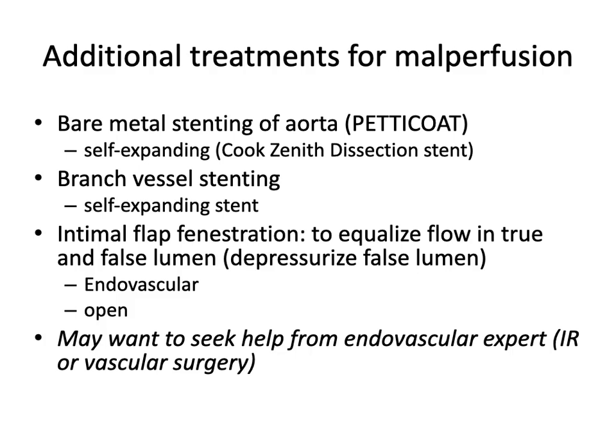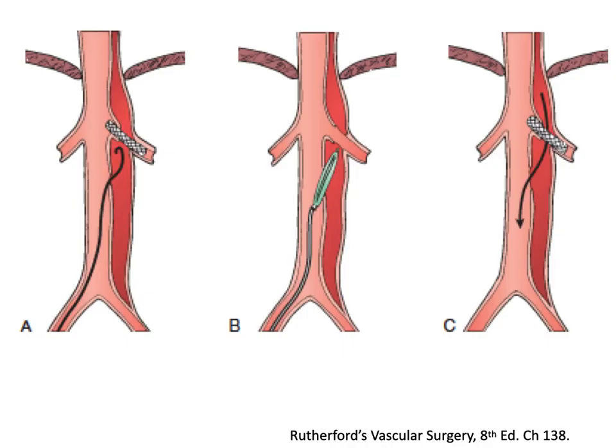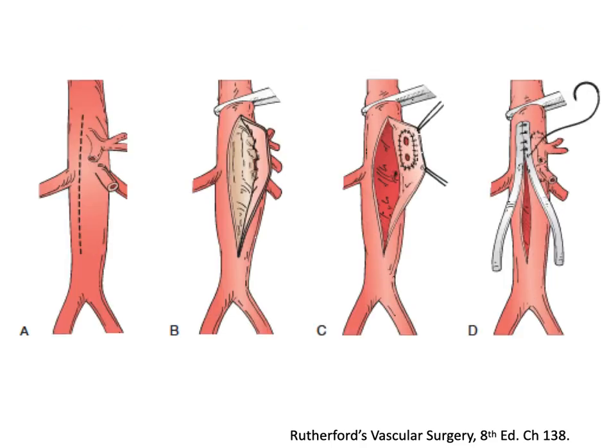Intimal flap fenestration equalizes flow in the true and false lumen, depressurizes the false lumen, and is typically performed in the infrarenal aorta. This technique can be performed endovascularly or through open surgery. One method involves creating a large hole in the intimal flap after puncturing it with an angioplasty balloon, often 12 to 14 millimeters. There is also a technique for open intimal flap fenestration of the visceral aorta.